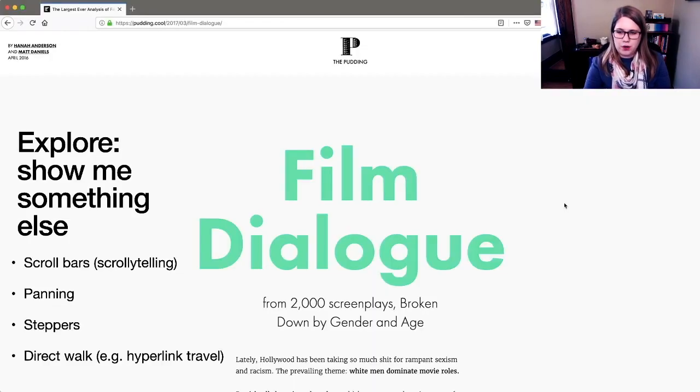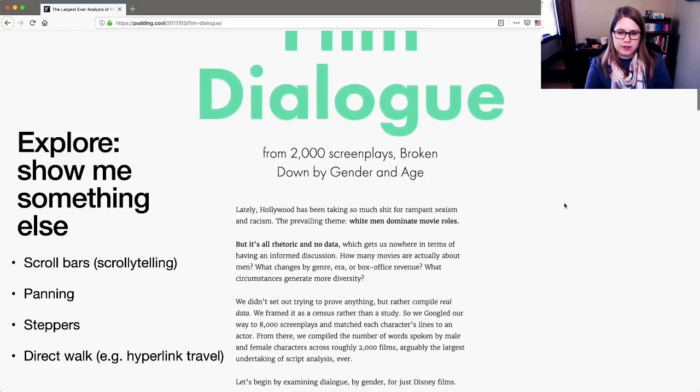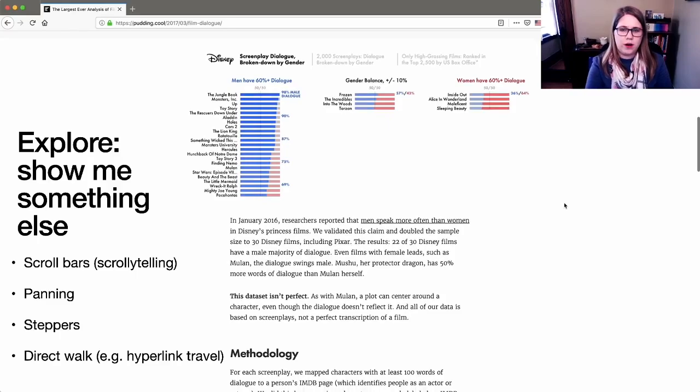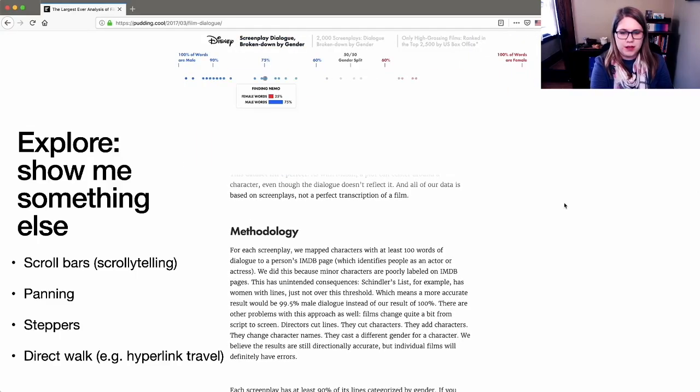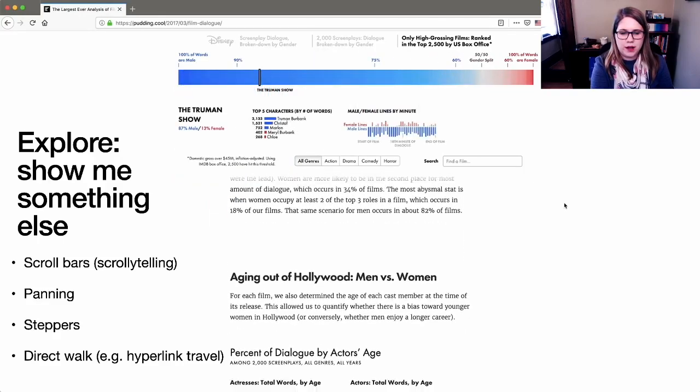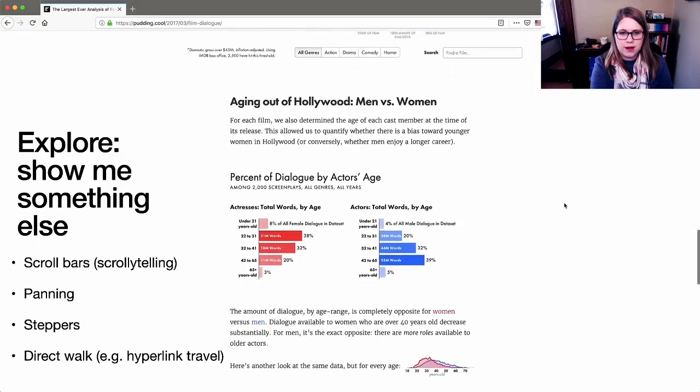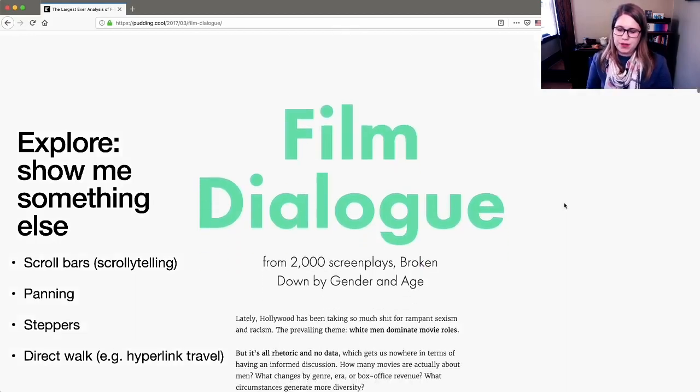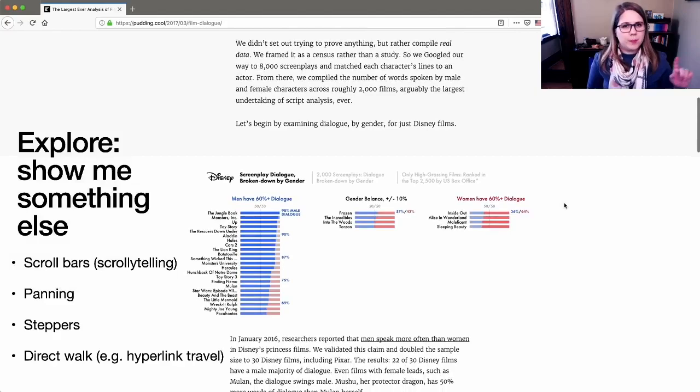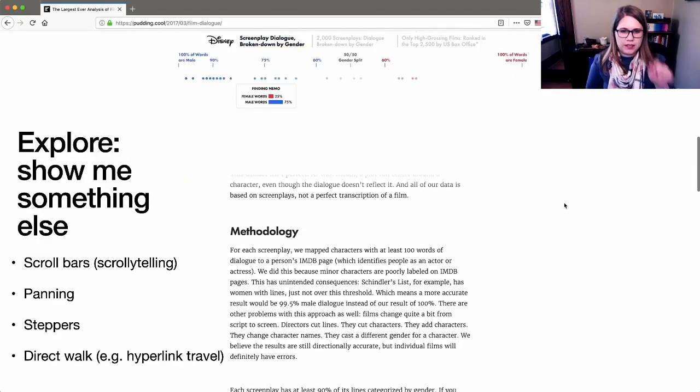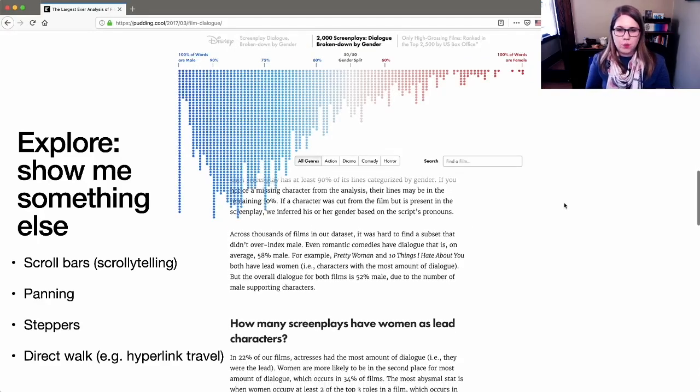An explorer would be something that would show you something else. So one way that you could do this is by scroll bars. So this is something called scrollytelling, where as you scroll through a piece of visualization, things change. This is from the pudding. And it's showing a screenplay dialogue from Disney movies. And as you scroll, you're sort of interacting with the visualization, you're seeing more and more pieces. You could also pan around, you could step through some stages. And you could do a direct walk like click on a hyperlink and get taken somewhere else. That's a way of exploring.